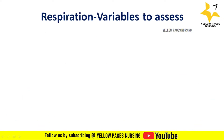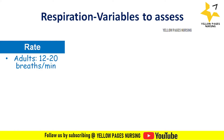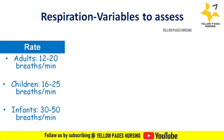What are the variables to assess respiration? Respiration is measured by observing chest rise and fall, and measured as number of breaths per minute. The first variable is rate — the number of breaths in one minute. Tachypnea refers to respiratory rate that is too high, and bradypnea refers to respiratory rate that is too low. In adults the normal range is 12 to 20 breaths per minute; in children, 16 to 25; and in infants, 30 to 50 breaths per minute.